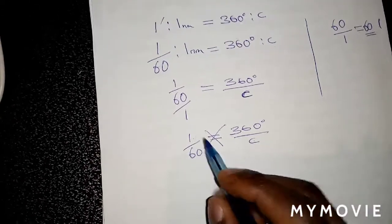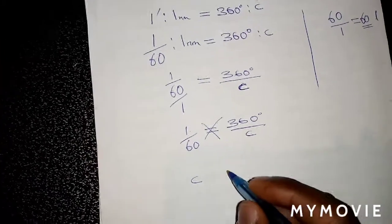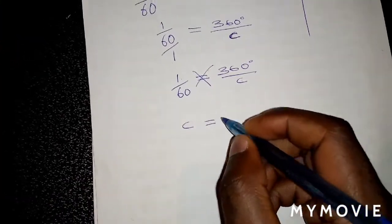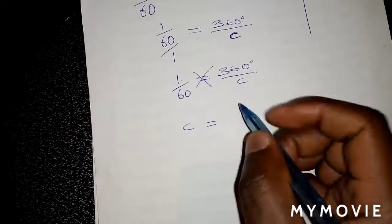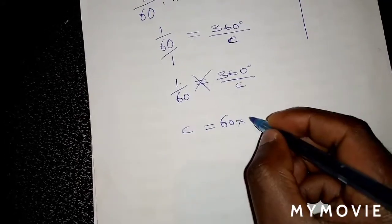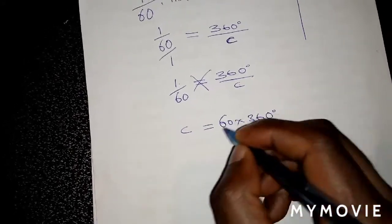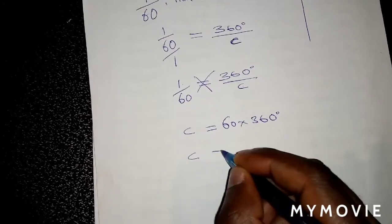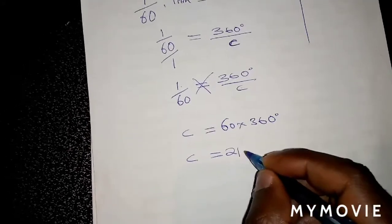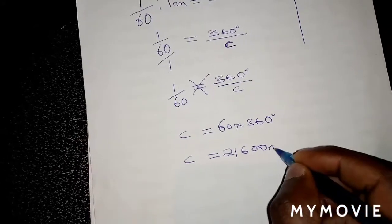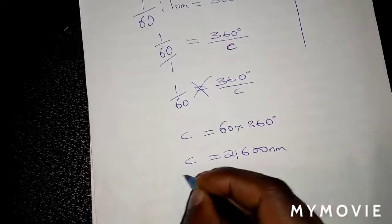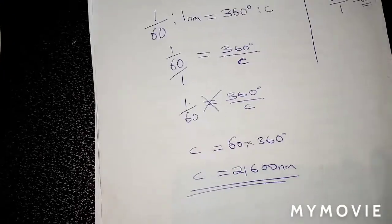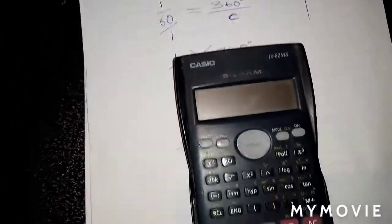So C multiplied by 1 is C, which is equal to 60 multiplied by 360 degrees. Therefore, C as circumference is equal to 21,600 nautical miles. That can be proven — if you punch that on the calculator, you get the same answer.